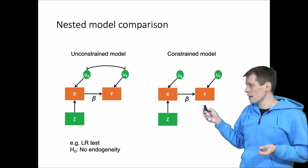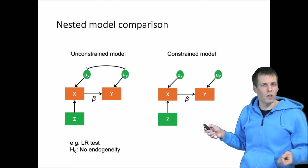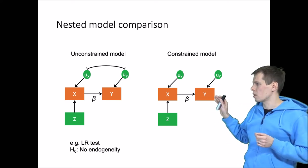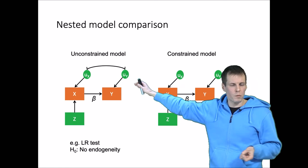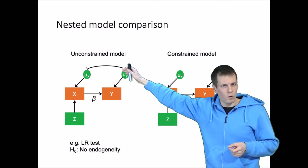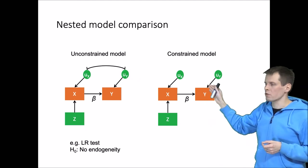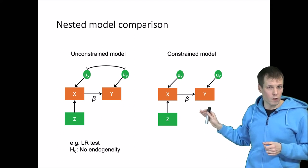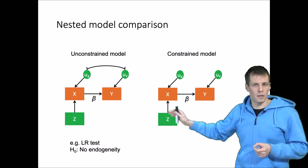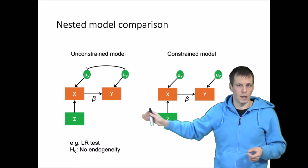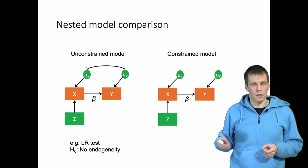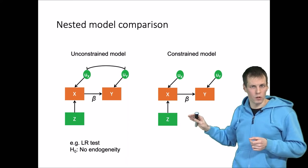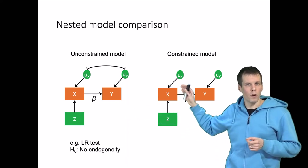Let's look at the nested model comparison in more detail. We need an unconstrained model, and then we take something out of it to arrive at the constrained model. This is the zero degrees of freedom unconstrained model; we remove the error correlation to get the constrained model, which has one degree of freedom, and then we compare the models. Of course with one degree of freedom we could just test it directly, but if we have more than one instrument then this nested model comparison is required, as it is a more focused test.